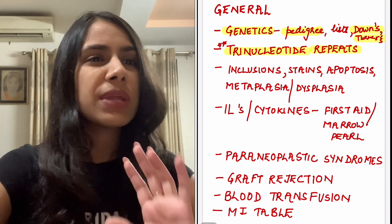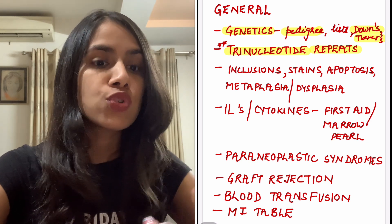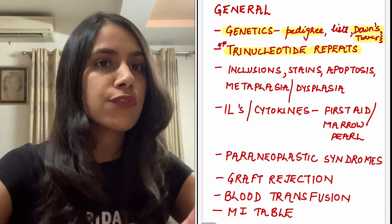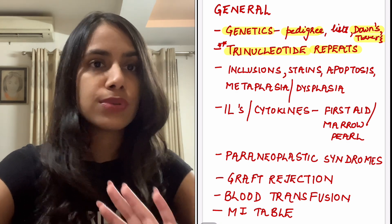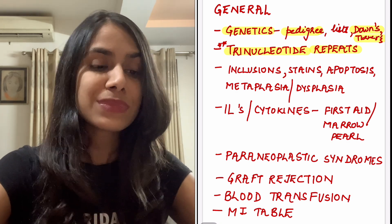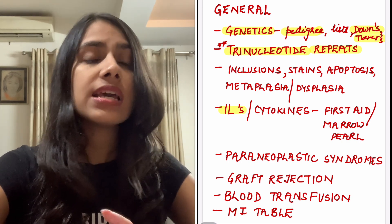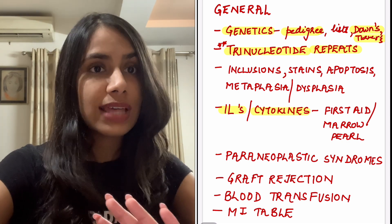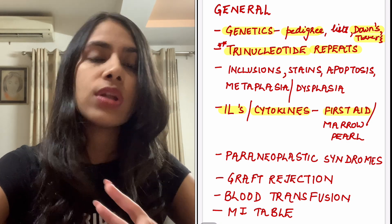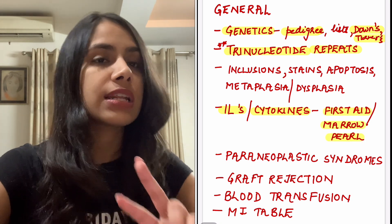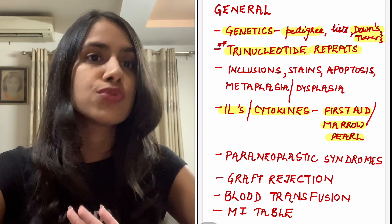Your simple lists — inclusion bodies, stains, types of apoptosis — look at these once. If you are weak there, these are simple questions you will be able to do for sure. Another list that has to be done is interleukins or cytokines — First Aid has a beautiful table on that, and so does Marrow Pearls. This is a little volatile but one or two questions do come on this, so do it before your exam.